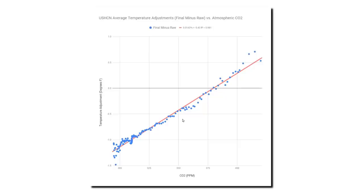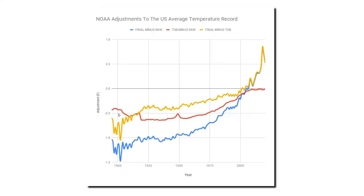I also showed in part two how the data is being altered precisely to match the increase in carbon dioxide. This is a real smoking gun of scientific malfeasance — the data is being altered to match the theory, rather than the other way around. In this video, I want to look at the adjustments in more detail.